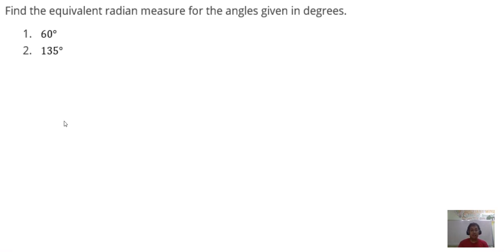For this example problem, we are required to convert the given measure of angles from degrees to radians. Just the same from our first example, let us recall: we know that 180 degrees is equal to pi radians.